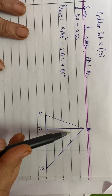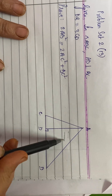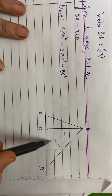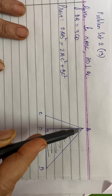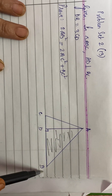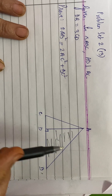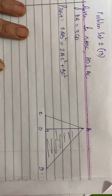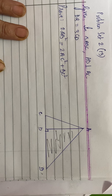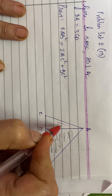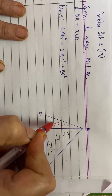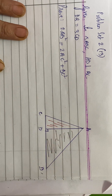If you have a look at the figure, we have two right triangles: triangle ADB and triangle ACD.